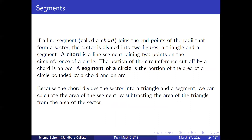If a line segment called a chord joins the endpoints of the radii that form a sector, the sector is divided into two figures: a triangle and a segment. A chord is a line segment joining two points on the circumference of a circle. The portion of the circumference cut off by a chord is an arc. A segment of a circle is the portion of the area of a circle bounded by a chord and an arc. Because the chord divides a sector into a triangle and a segment, we can calculate the area of the segment by subtracting the area of the triangle from the area of the sector.